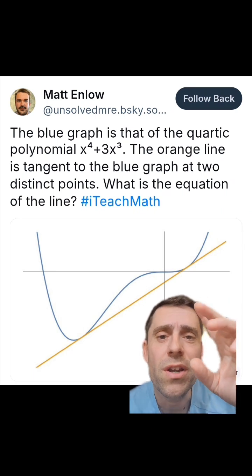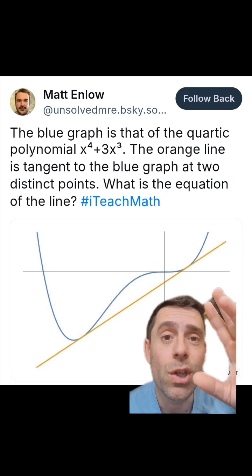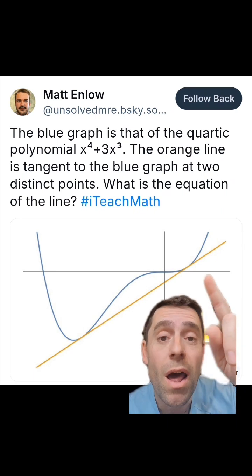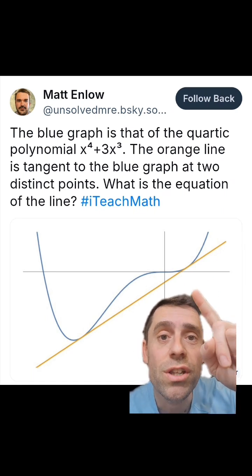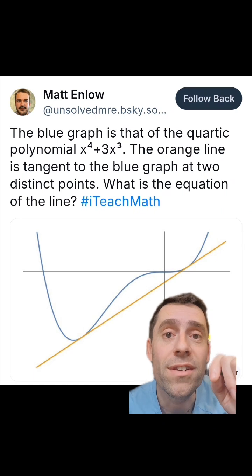There is in blue a function, x to the fourth plus 3x cubed. And then there is some line, this orange line, that touches its tangent at two different points. And the question is, find that orange line.